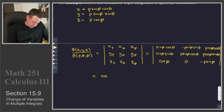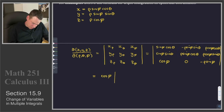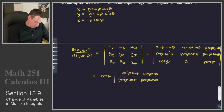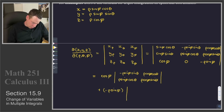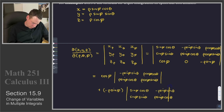So it's going to be cosine phi times the determinant of the resulting two-by-two matrix — that's the upper two-by-two portion. Then we subtract off zero times the determinant of the corresponding two-by-two submatrix, but it's zero times it, so it's just zero. And then we add negative rho sine phi times the determinant of another two-by-two matrix.